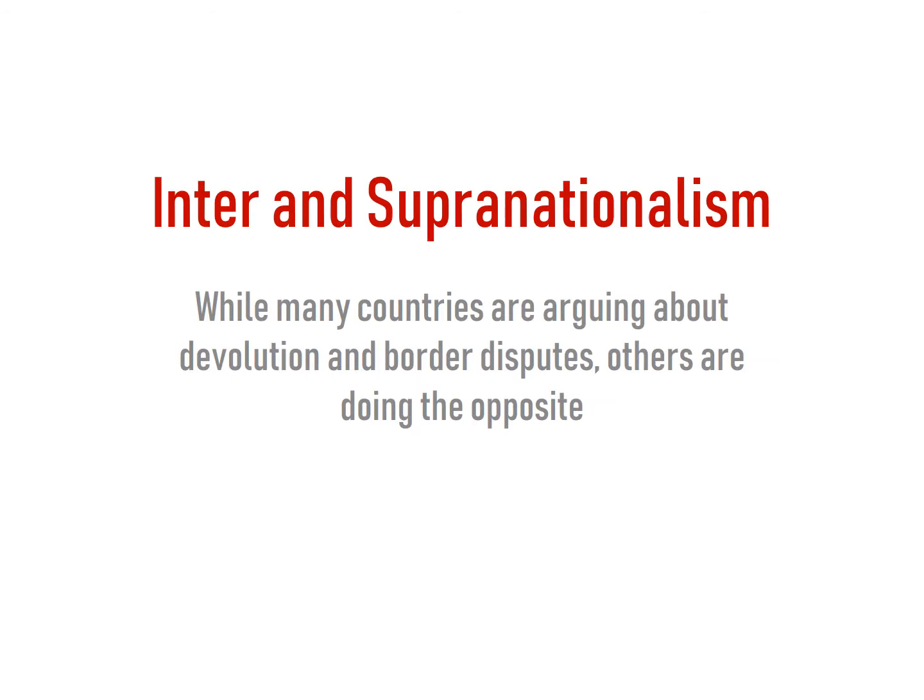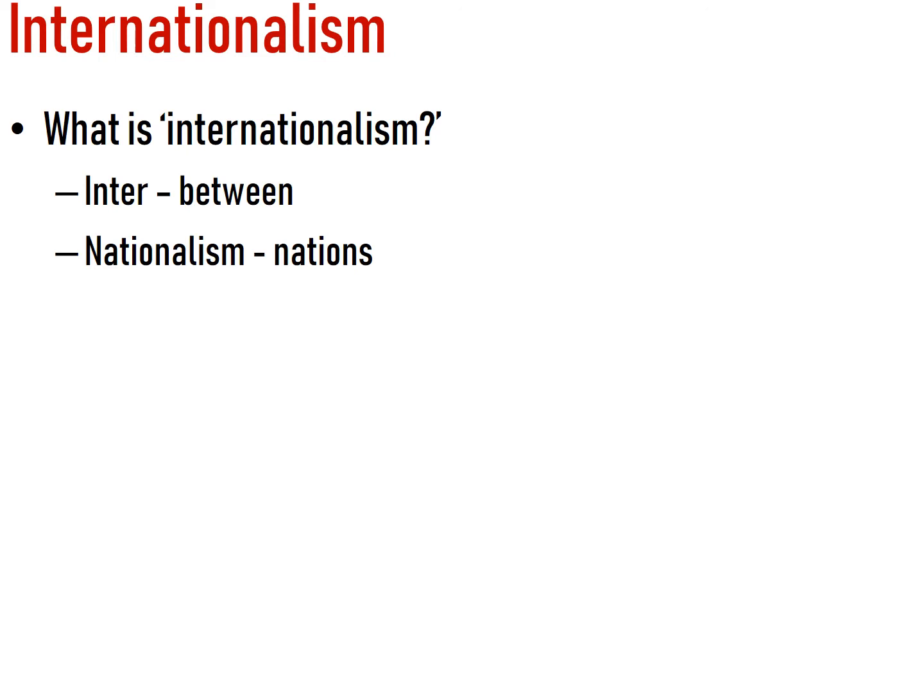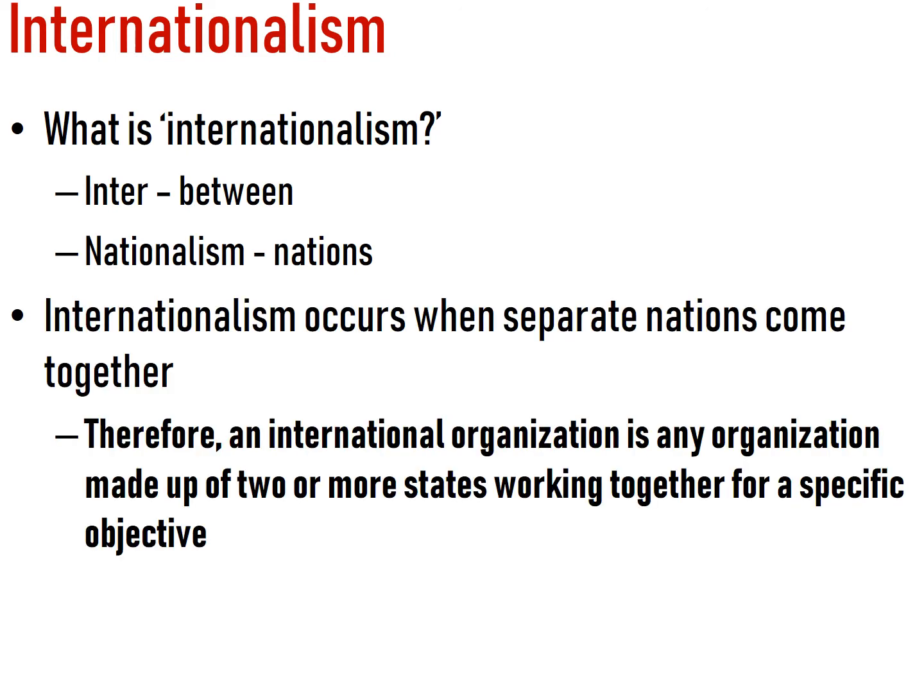While countries are arguing and devolution is happening and border disputes are happening, some other countries are doing the opposite. Internationalism is an idea between countries — between nations — working together for something. International organizations are made up of two or more states working together for a specific objective. We are going to come together and accomplish one goal. Here are some examples.